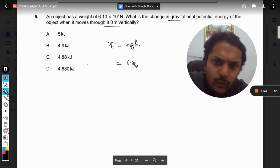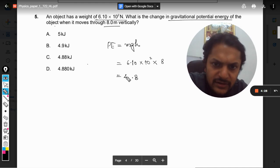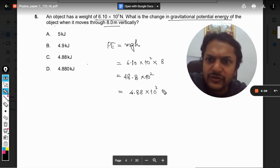So it will be taken as 6.10 × 10² into the height, which is 8 meters. So now we will calculate it. 8, we just multiply it, 48 × 10², so it will become 4.88 × 10³ Joules.